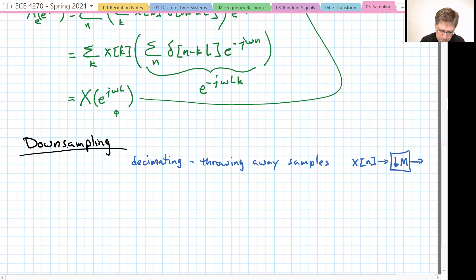What would come out if we had x of n going into this thing? This would give us x of 0, and then the next one that came out would be x of m, and then we skip a bunch more and so we get x of 2m and x of 3m and so on. So the output, I'll just call it x of d of n, will be x of n times m. That's it.